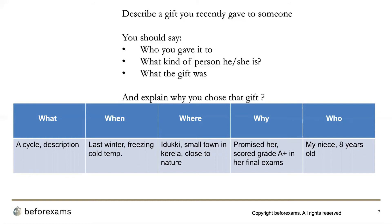Why did I give it? — I promised my niece that if she scored an A-plus grade in her final exams, I'd give her a cycle. Who did I give it to? — My niece, eight years old. Note that you don't have to frame answers in the same order as the W Rule — you should order them according to the hints on the cue card, otherwise your answer will seem haphazard.